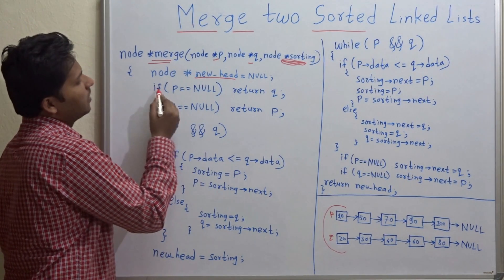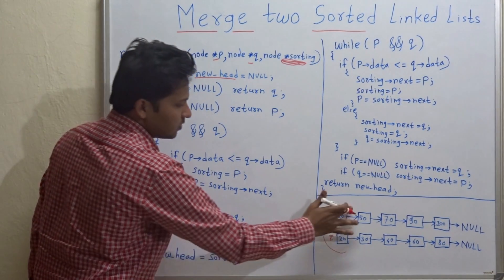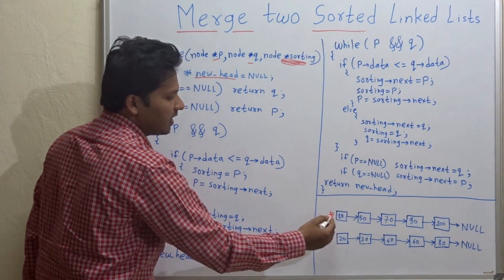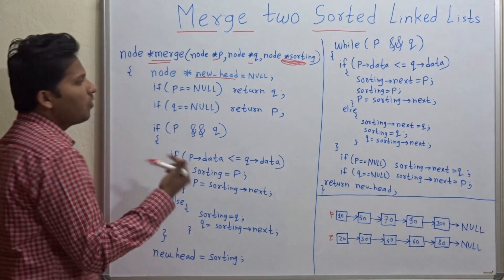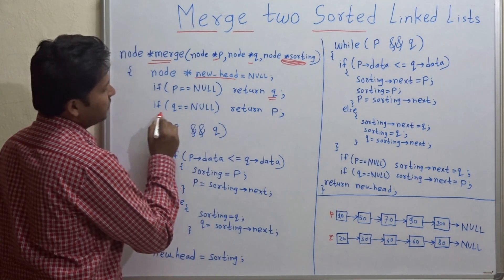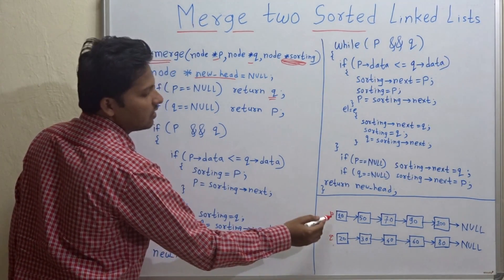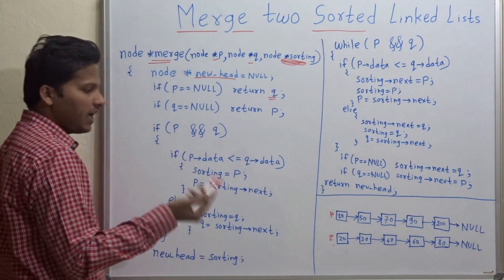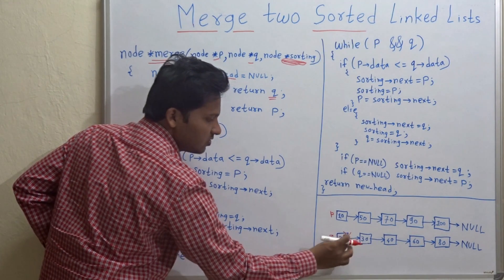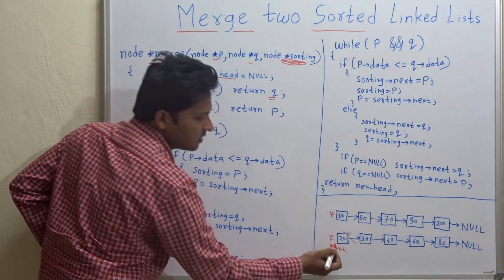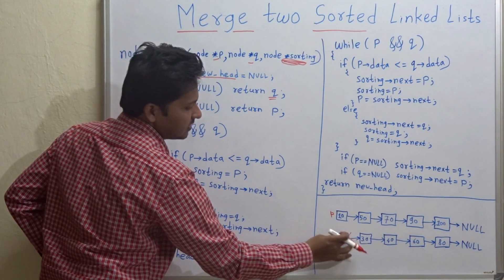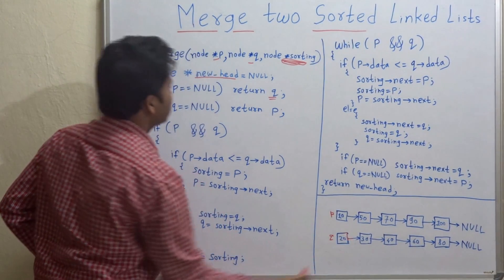If P equals null, return Q. So if out of the two linked lists P is empty, then obviously our answer is Q. If Q is null, then P is our answer as it is. So here, suppose if Q is not present and Q points to null, then the merged sorted linked list will be only P. Now let's go ahead with the code.